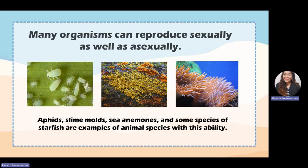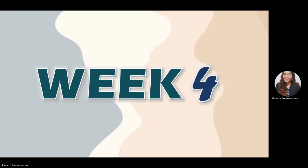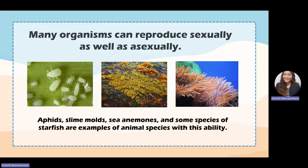Many organisms can reproduce both sexually and asexually. Examples include aphids, slime molds, sea anemones, and some species of starfish — organisms that can portray both asexual and sexual reproduction. That is the end of our Module Two. If you have questions, you can chat me on our GC. Thank you and goodbye.